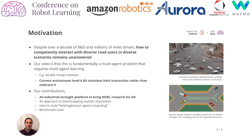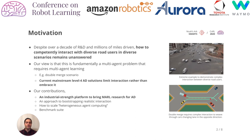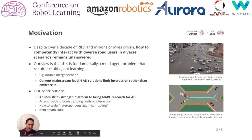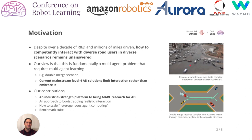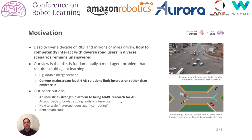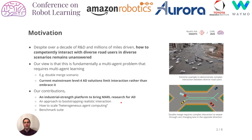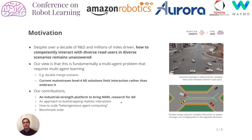Despite over a decade of R&D and millions of miles driven by autonomous vehicles, how to competently interact with diverse road users in diverse scenarios remains an unanswered question. Even a seemingly simple example like the double merge requires fairly complex interaction between vehicles, and the top right example speaks for itself. Yet, mainstream L4 autonomous driving solutions limit interaction rather than embrace it. Our view is that this is fundamentally a multi-agent problem that requires multi-agent learning.